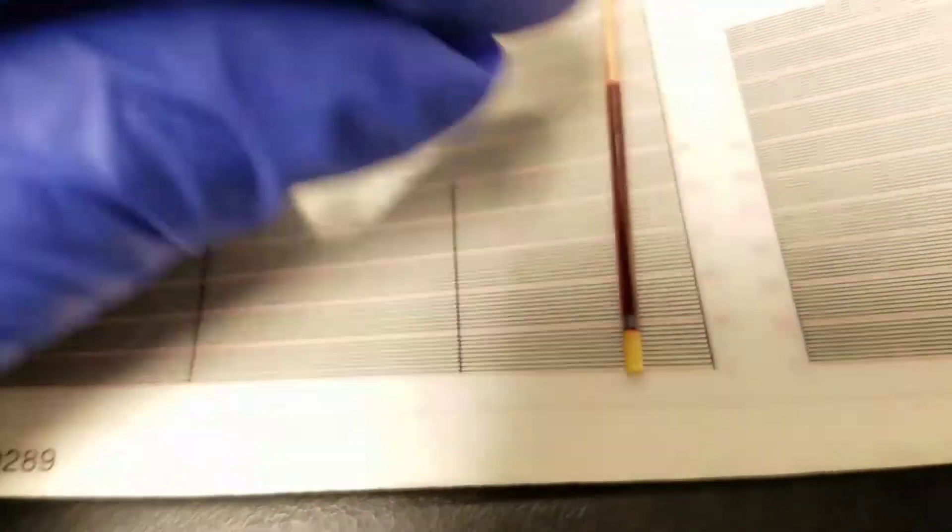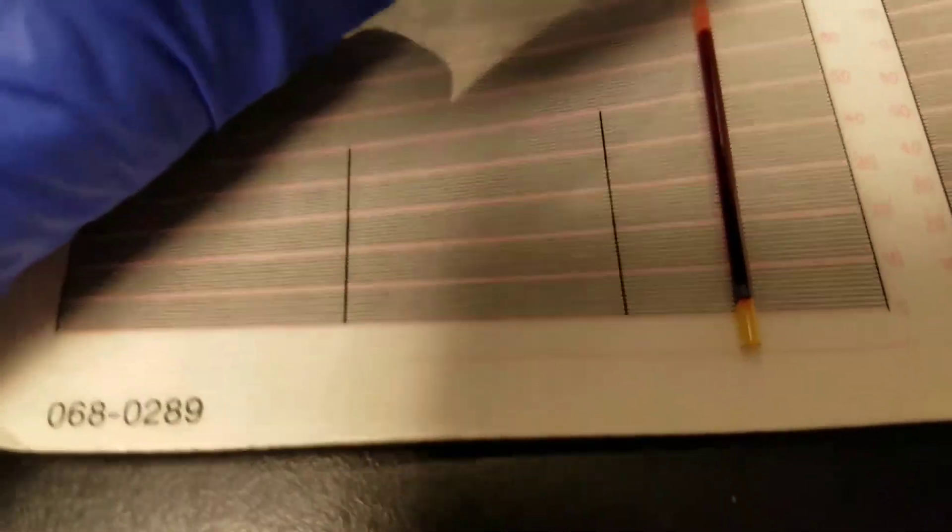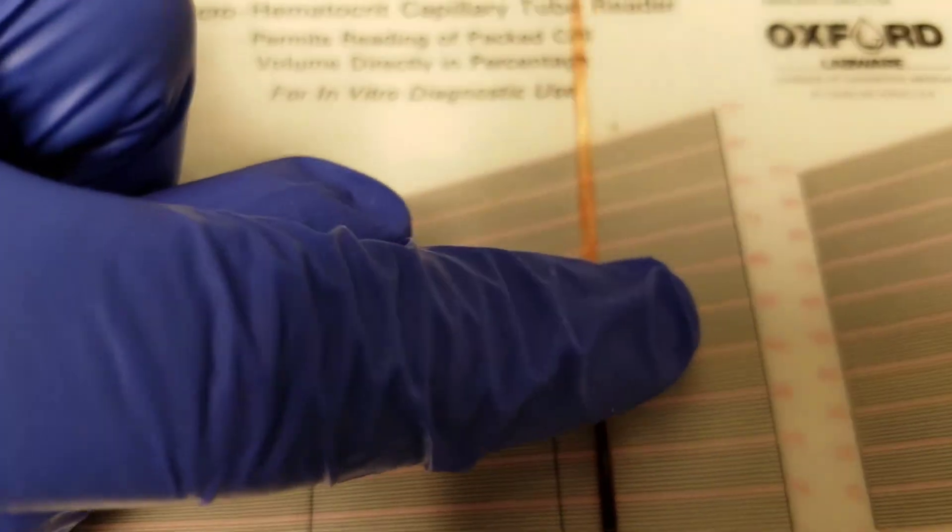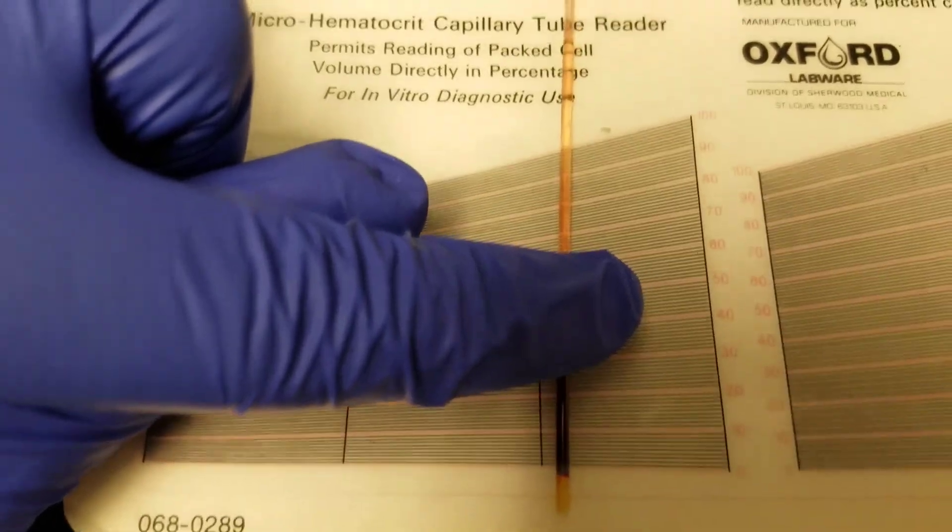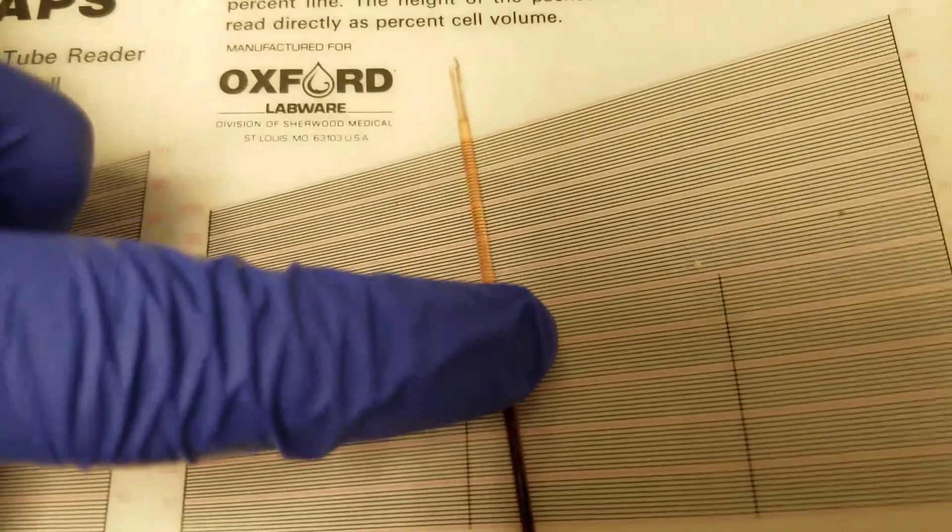Now, if you had less plasma and just less whole blood in there in general, then we could use this smaller incline. But this one's for more tubes that are more full.